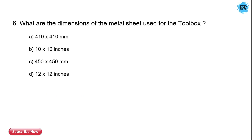The 6th question is: what are the dimensions of the sheet metal used for the toolbox? The dimension used for the toolbox is 410 x 410 — it is a square.